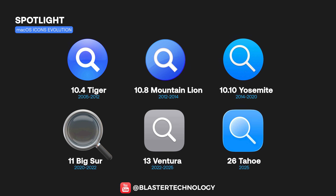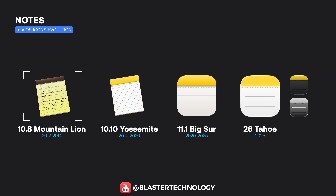The Spotlight icon has maintained its identity over time, evolving from a glossy blue magnifying glass into an increasingly simplified symbol. The same applies to the Notes icon, which transitioned from a realistic sheet of paper with handwritten text to an increasingly simple and flat design.